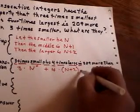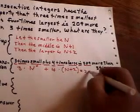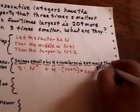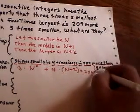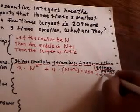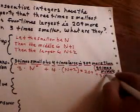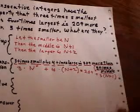Is is translated as equal. 209 is 209. More than is plus. And three times the middle. And since the middle is made up of two terms, n plus one, I've got to use brackets there as well.